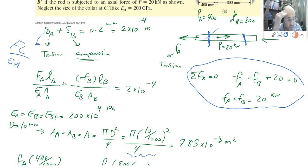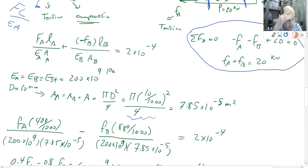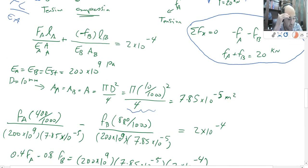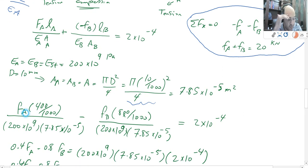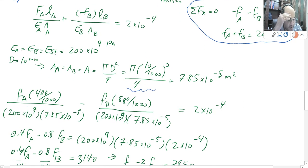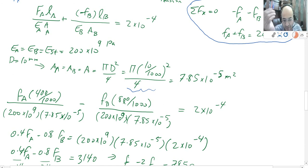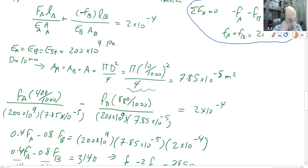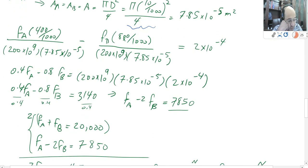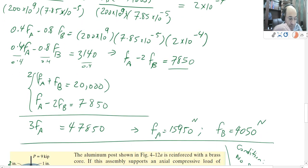You substitute the values and find one equation. We have the same denominator, we cross multiply. You must keep in mind to bring everything to the same units: force to Newtons, length to meters, E to Pascals which is Newtons per meter squared, and area to meters squared. I end up with two unknowns and two equations, then I solve for F of A and F of B. This problem is a statically indeterminate problem — you couldn't solve it using statics alone.